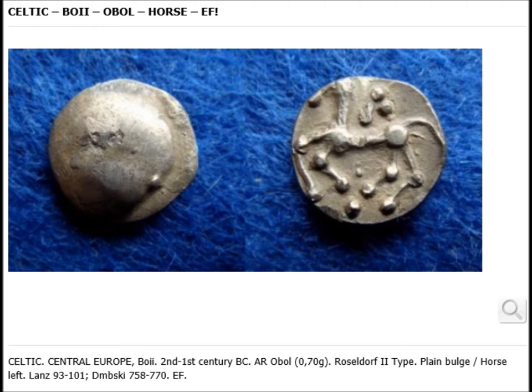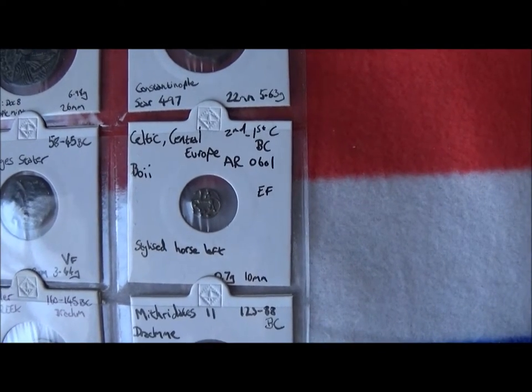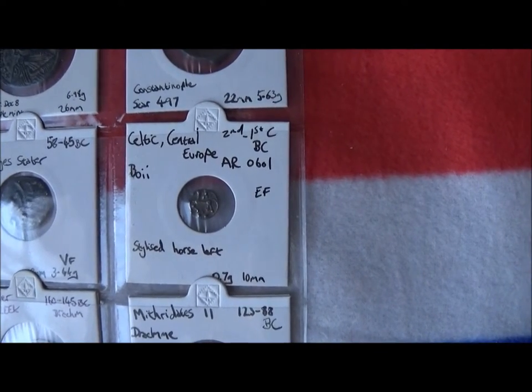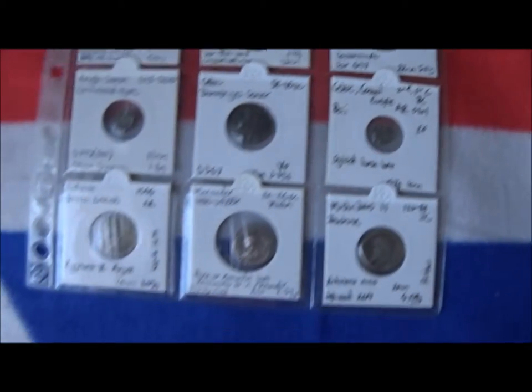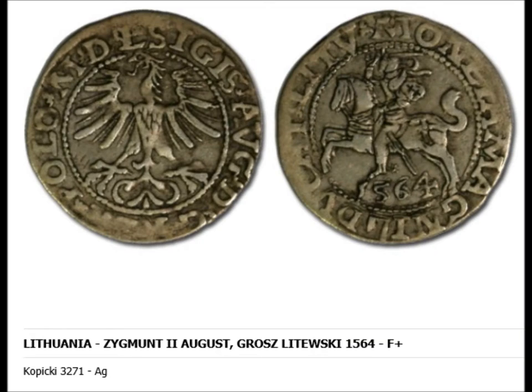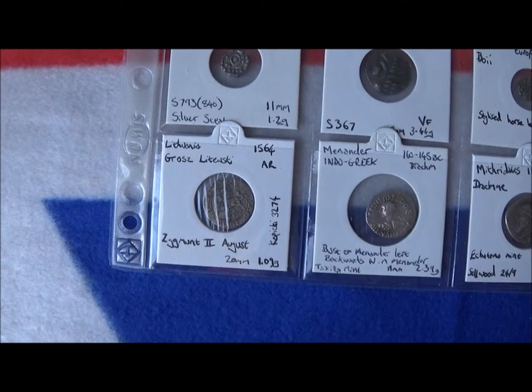Another Celtic coin, this time with a stylized horse on the reverse. Then, a little out of place, another coin with a horse on it — a Lithuanian coin. I've always liked their symbolism of the horse and rider, and on the other side an imperial eagle.